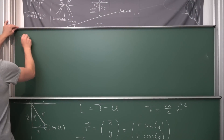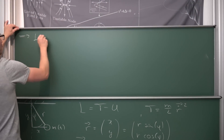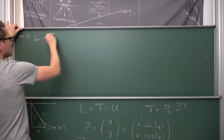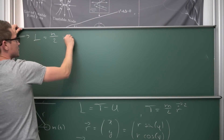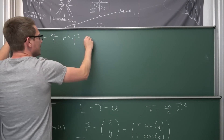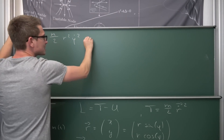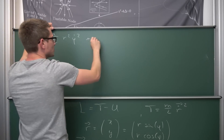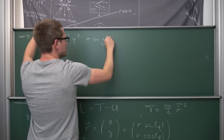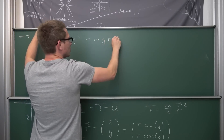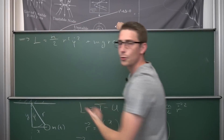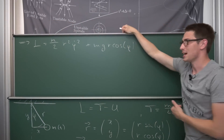Our Lagrangian overall is going to be T minus V: m over 2 times r squared times phi dot squared, and then minus and minus turns into a positive sign, giving us plus m times g times r times the cosine of phi. And this is our Lagrangian.